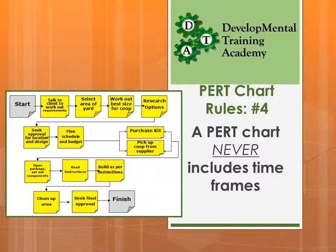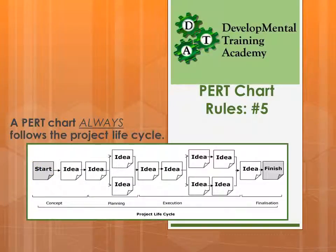Rule number four: a PERT chart should never include time frames. Our basic PERT chart for our chicken coop is just ideas — it doesn't have any time frames included. Rule number five, the bonus rule: a PERT chart always follows the project life cycle. Concept is where you work out the parameters; planning is where you put the structure in place; execution is actually completing the project; and finalisation is tidying up, writing reports, and finalising everything at the end. The PERT chart follows that structure. On extremely large projects the concept, planning, and execution cycles may be repeated, but it will always follow that process.